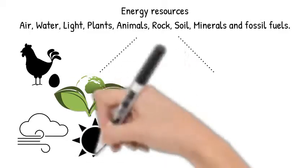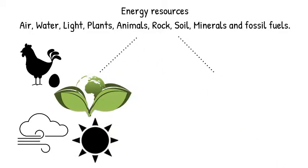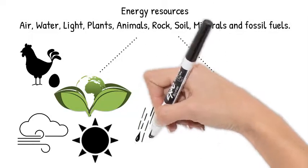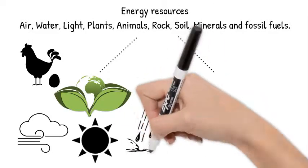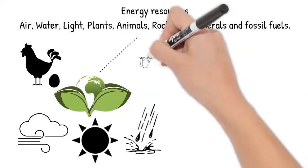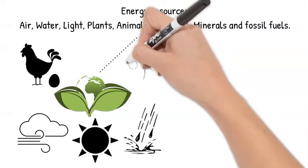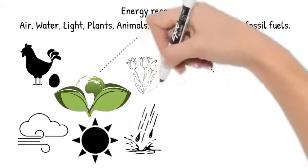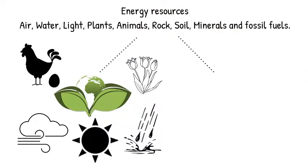Wind energy is created naturally by our earth's weather systems. Light and heat energy from the sun, hydropower which is power from the movement of water through the water cycle, and biomass from the stored energy in plant and animal matter.